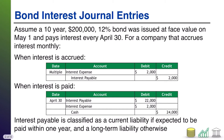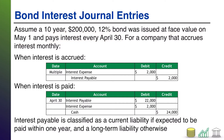So let's start with interest. Here I give you an example. Assume that a 10-year, $200,000, 12% bond was issued at face value on May 1st, and it pays interest every year on April 30th. For a company that accrues interest monthly, here is what your monthly interest accrual will look like.